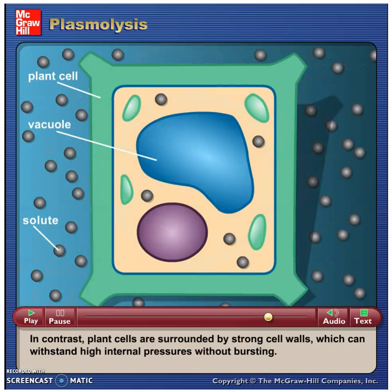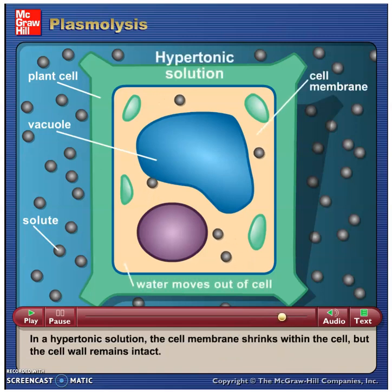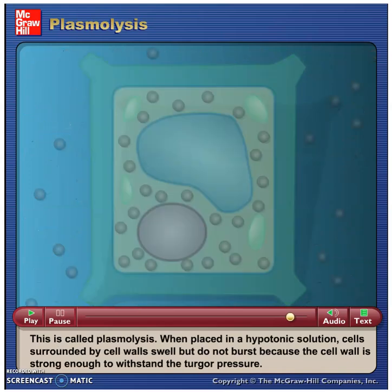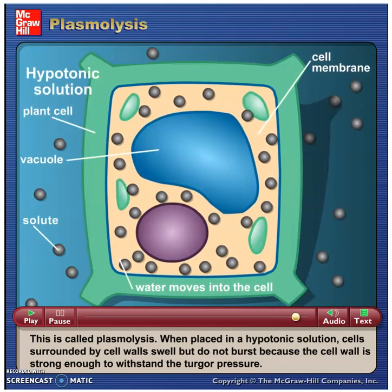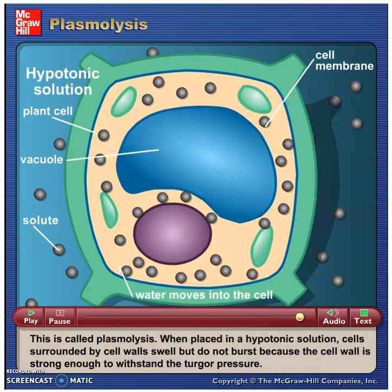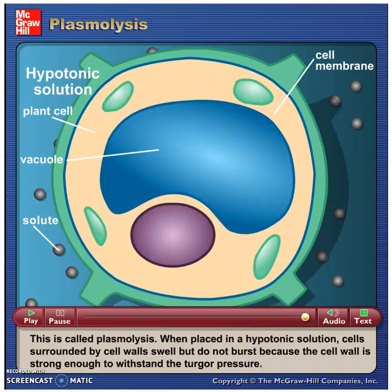In contrast, plant cells are surrounded by strong cell walls, which can withstand high internal pressures without bursting. In a hypertonic solution, the cell membrane shrinks within the cell, but the cell wall remains intact. This is called plasmolysis. When placed in a hypotonic solution, cells surrounded by cell walls swell but do not burst, because the cell wall is strong enough to withstand the turgor pressure.